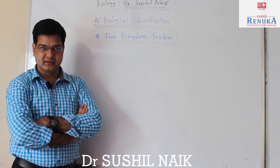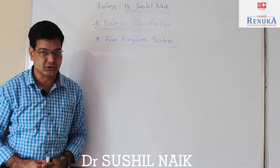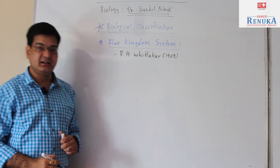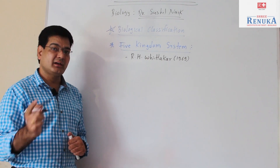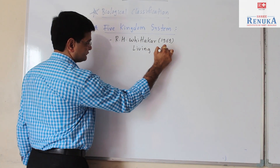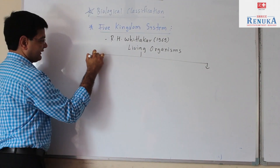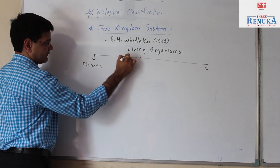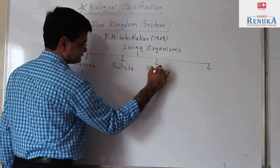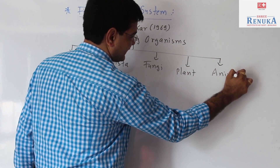Welcome all of you in Renuka Institute of NEET. I am Dr. Sushil Naik. Today in biology lecture, we will talk about biological classification — specifically the five kingdom system of classification. R.H. Whittaker was the scientist who classified living organisms into five different kingdoms: Monera, Protista, Fungi, Plantae, and Animalia.